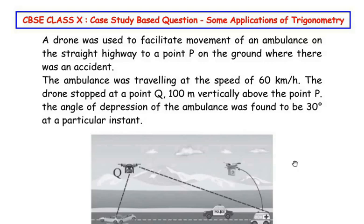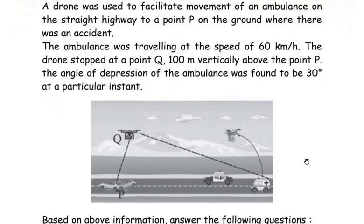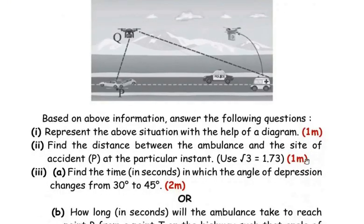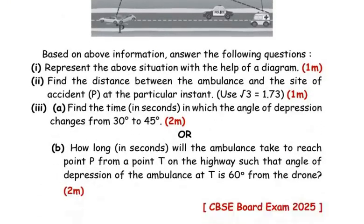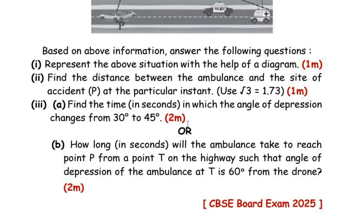Hello and welcome to my channel. In this video, we are going to solve a case study based question from the Applications of Trigonometry chapter which appeared in the CBSE Board Exam 2025. This question has three sub-questions. The first and second sub-questions are for one mark and the third is for two marks, with an OR question as well — you can attempt either the A or the B question. Let us start with the first question now.